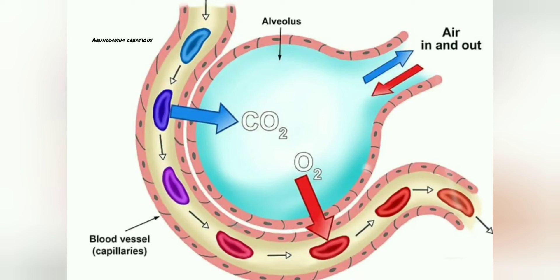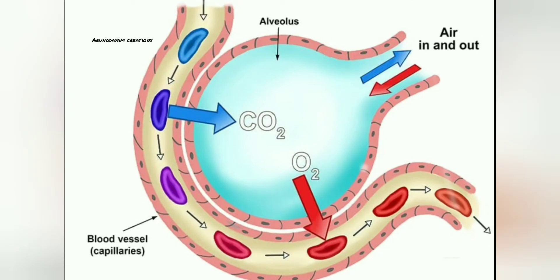The carbon dioxide which enters the alveolus will move out of the body during the exhalation process. The oxygen which enters the blood capillaries will combine with a red pigment called hemoglobin and form a compound called oxyhemoglobin. The blood carrying oxyhemoglobin returns to the heart and is then pumped to all parts of the body, where the oxyhemoglobin splits back into oxygen for the oxidation of food materials.